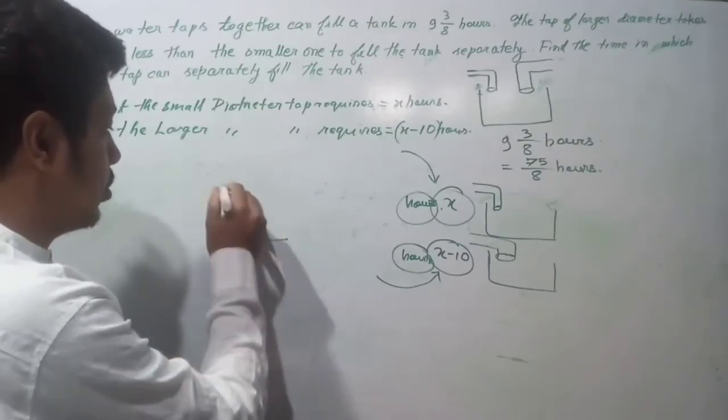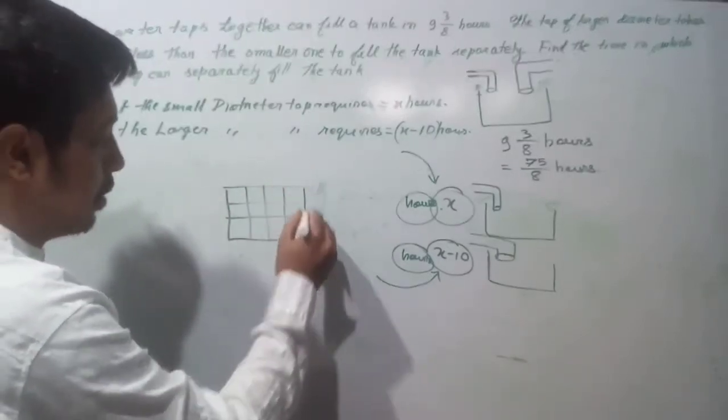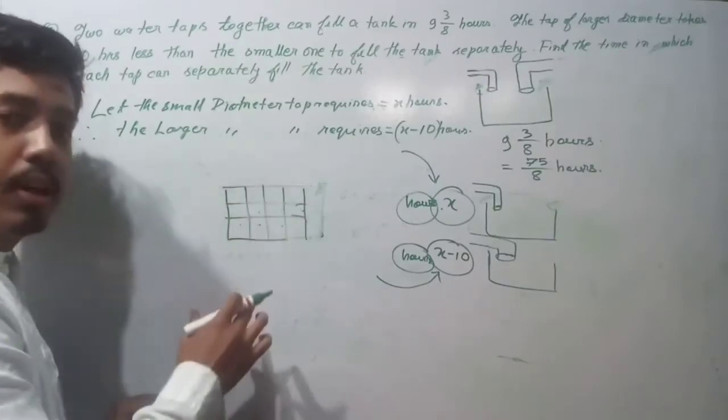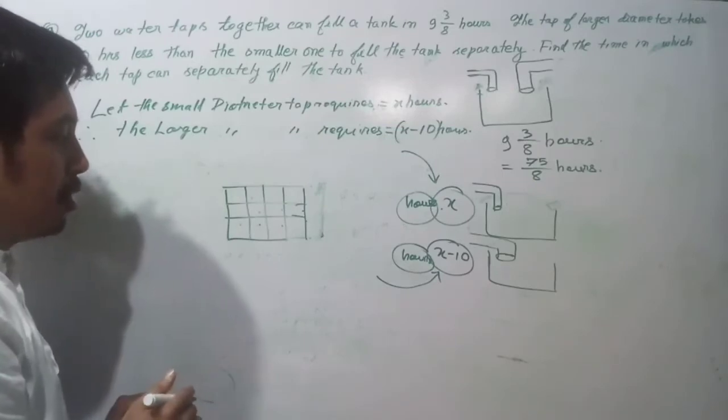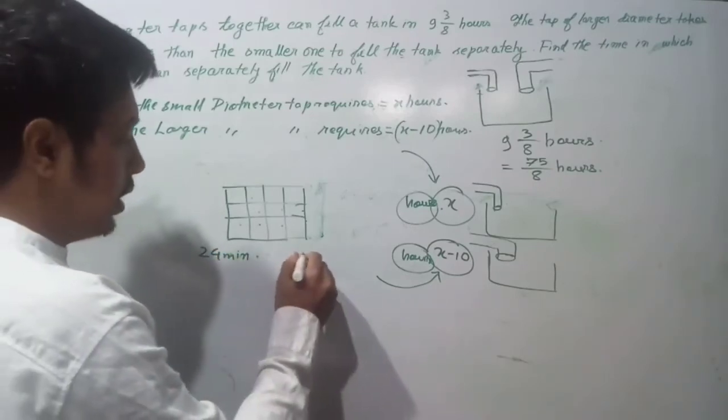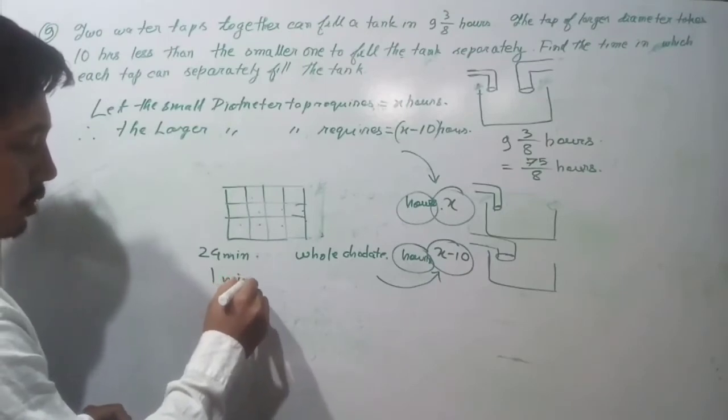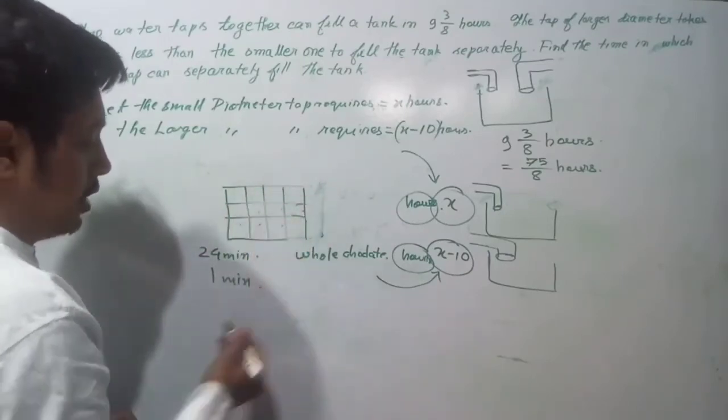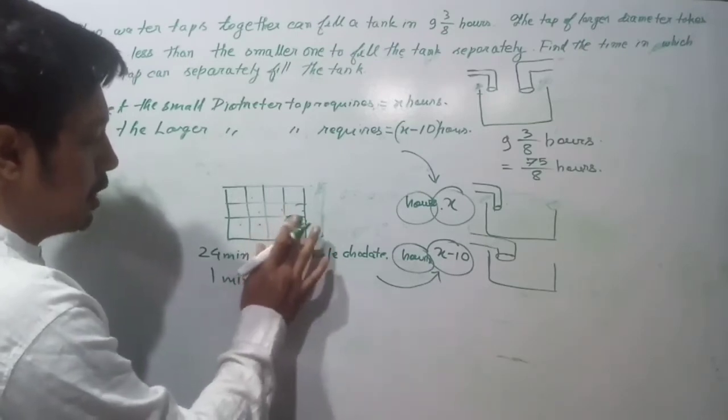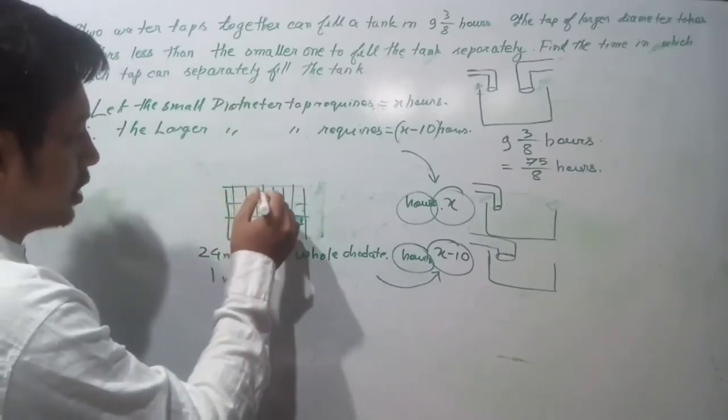Suppose there is a chocolate. How many parts are there? If you eat the whole chocolate in 24 minutes, then in 1 minute you eat 1/24th part of the chocolate.